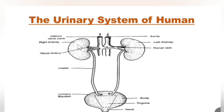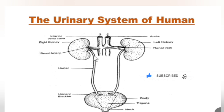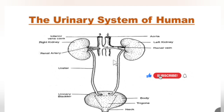The kidneys are somewhat reddish-brown in color. They have a concavity in the center called the hilum. The hilum is the point through which the renal artery, renal vein, and ureters find their passage to enter and leave the kidney. The kidneys are located on the dorsal side — the back side of the body — inside the lower abdominal cavity, above the waistline.